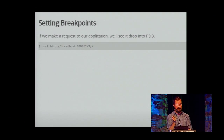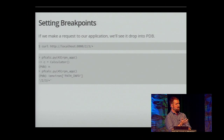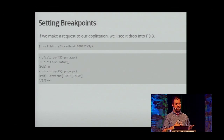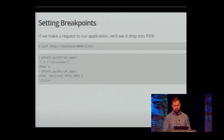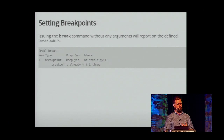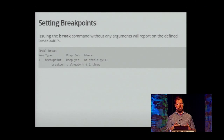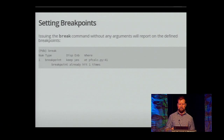Once we set a breakpoint and use curl to make another request, it stops right inside the rpnapp function before it even creates the calculator class and before it tries to process the input. We can inspect the state of things like environ and path_info. When you issue the break command by itself without any parameters, it lists all breakpoints for you and tells you if they've been triggered.